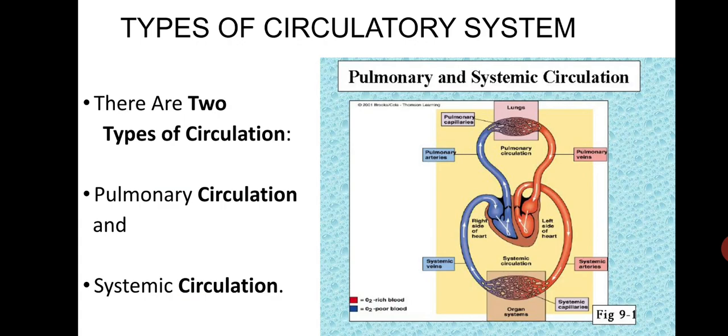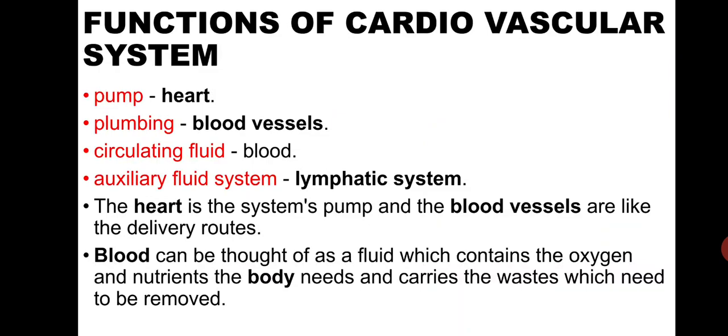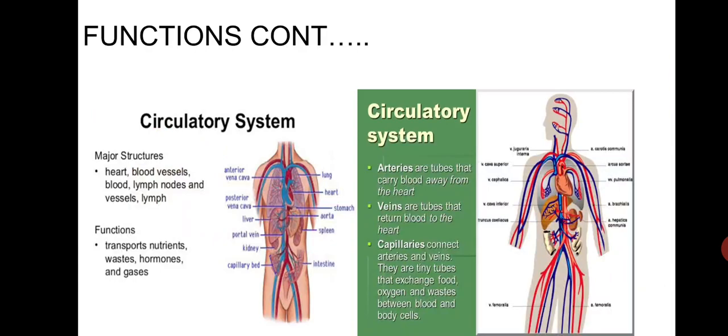Now comes the functions of the cardiovascular system. First, the pump is the heart which pumps blood to different parts of the body. Second is the plumbing, which is done by the blood vessels. Circulating fluid is the blood. The auxiliary fluid system is the lymphatic system. The heart is the system's pump and the blood vessels are like the delivery routes. Blood can be thought of as a fluid which contains the oxygen and nutrients the body needs and carries the waste which needs to be removed.